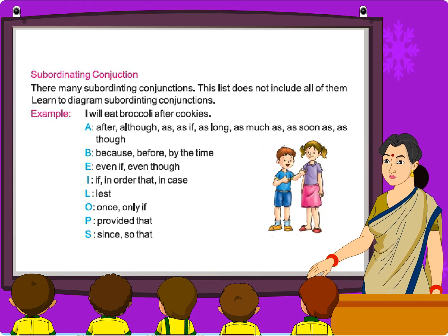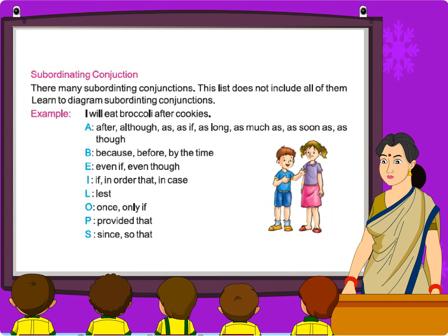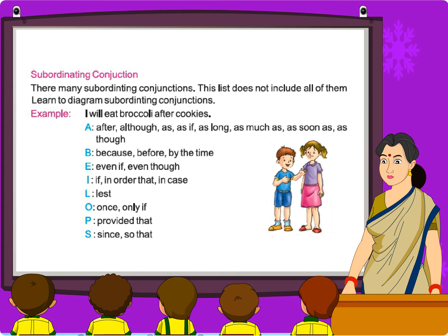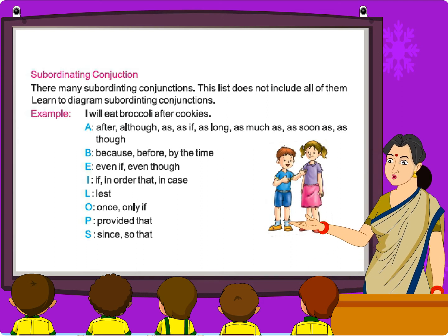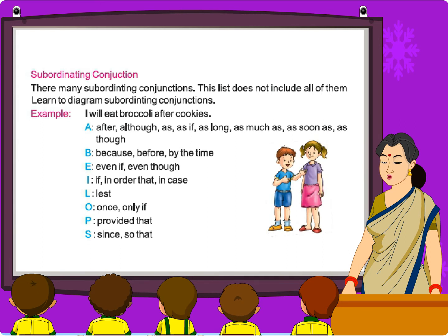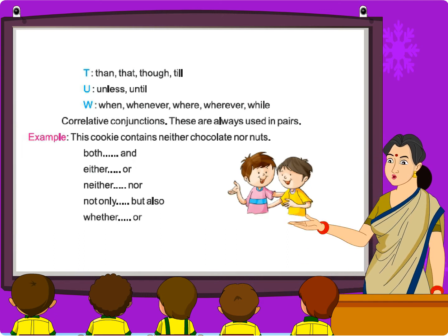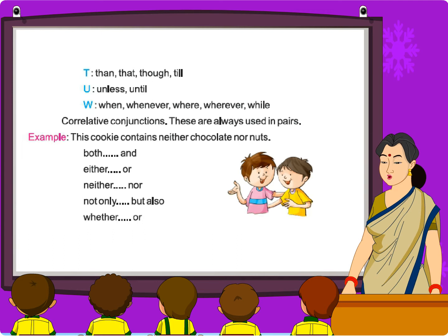Subordinating conjunctions: there are many subordinating conjunctions; this list does not include all of them. Learn to diagram subordinating conjunctions. Example: I will eat broccoli after cookies. Here are some: after, although, as, as if, as long as, as much as, as soon as, as though, because, before, by the time, even if, even though, if, in order that, in case, lest, once, only if, provided that, since, so that, then, that, though, till, unless, until, when, whenever, where, while.